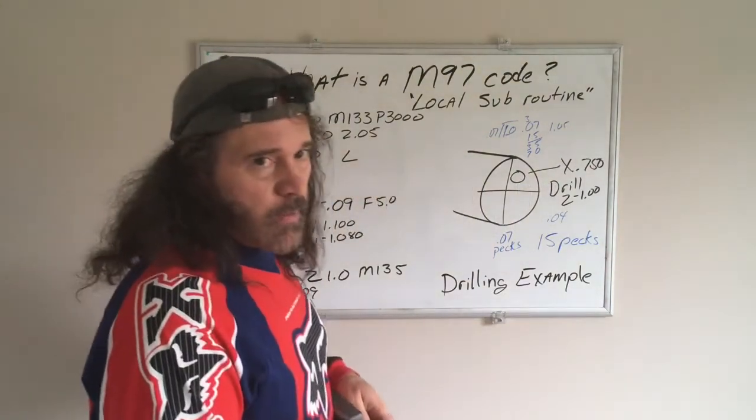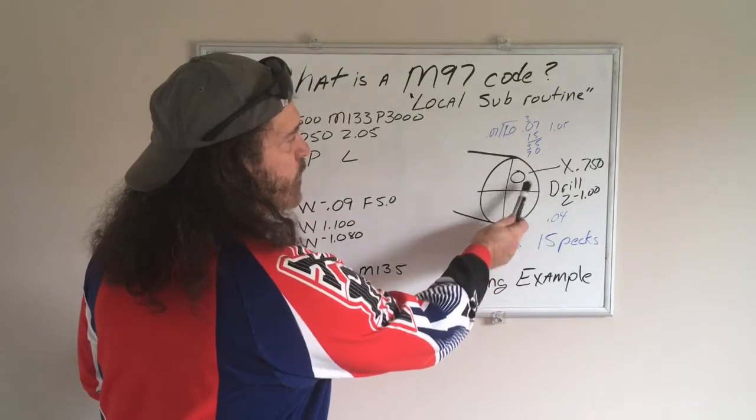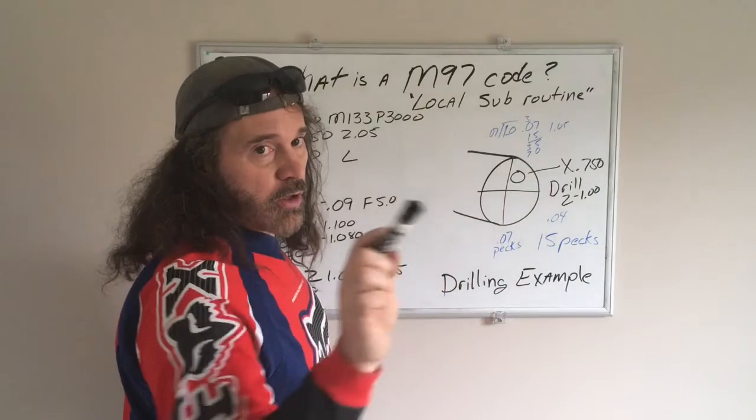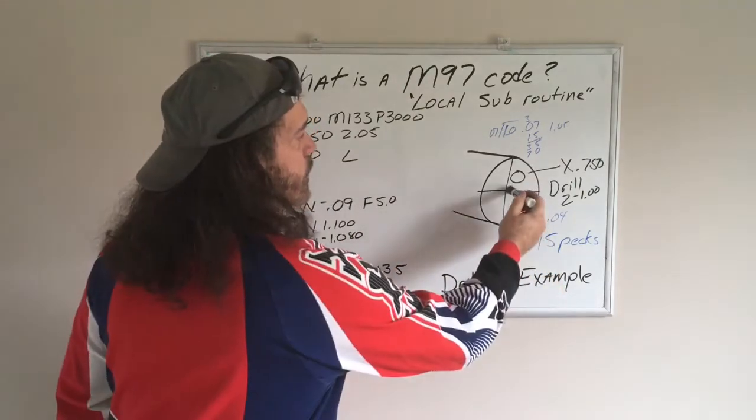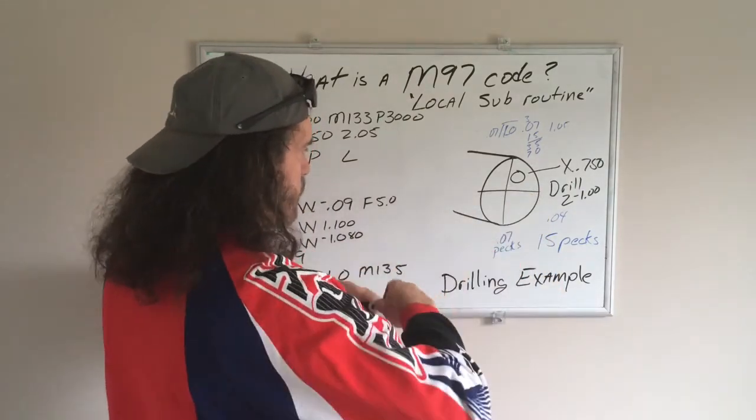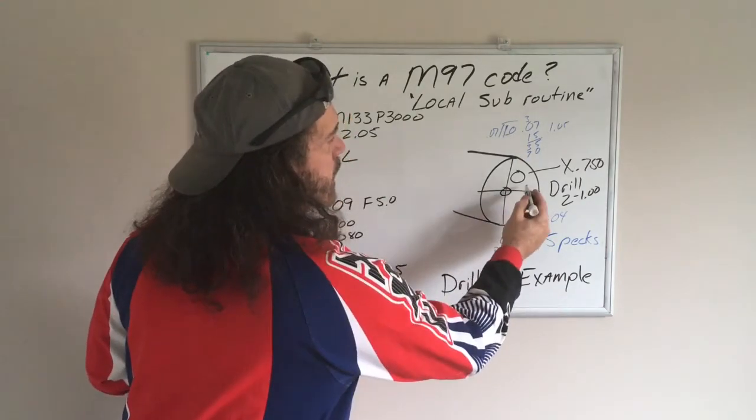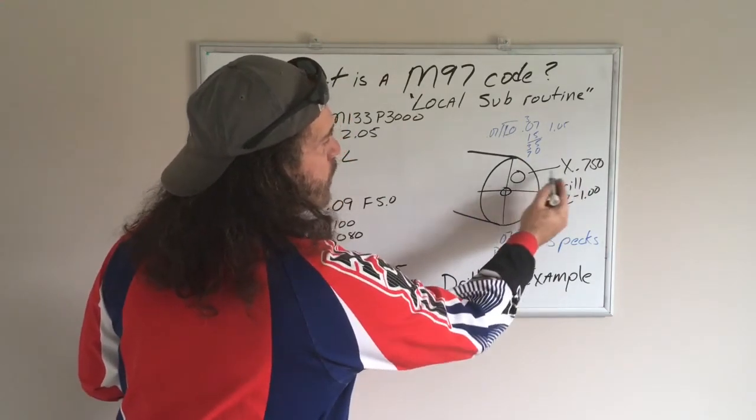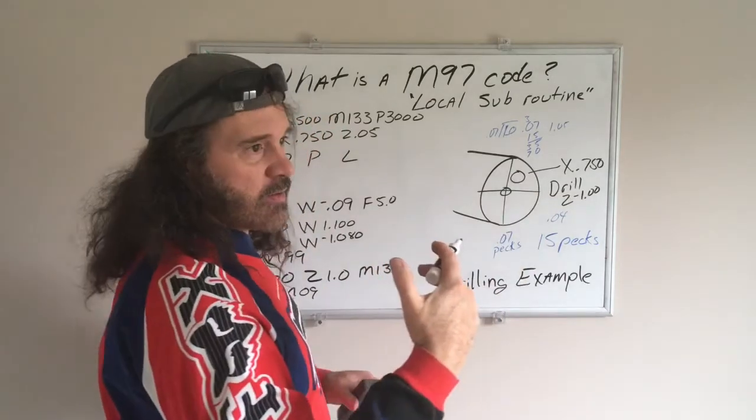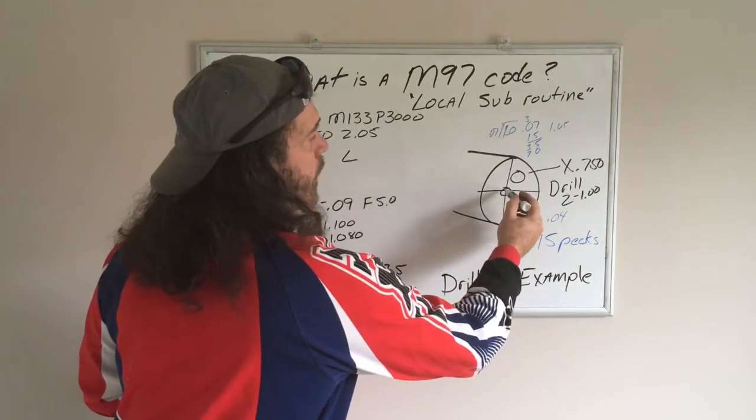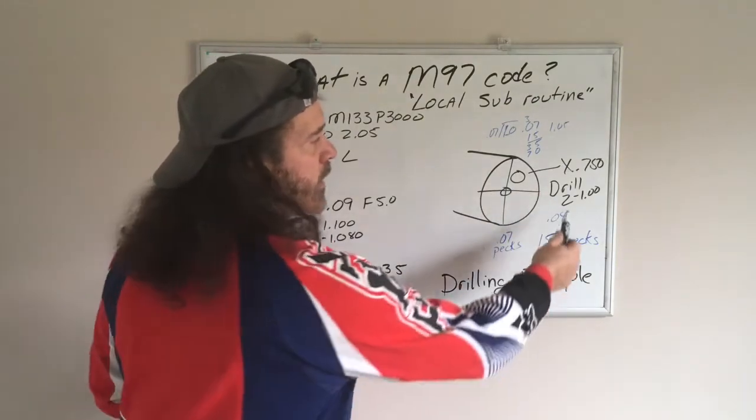Let's say you have a piece of stock, and this is for a lathe. You want to drill a hole, but you have to do it off-center. So this is the center line right here. And let's say you want to drill a hole at X three-quarters of an inch, so it's 750 off-center line. And you want at least an inch deep.